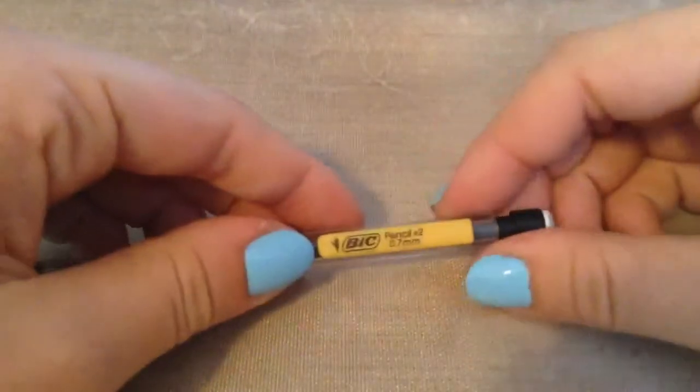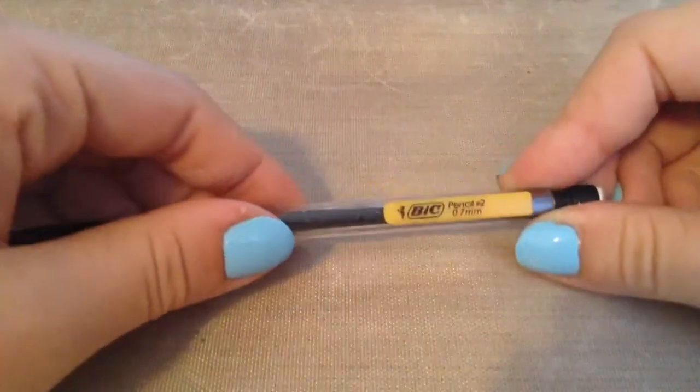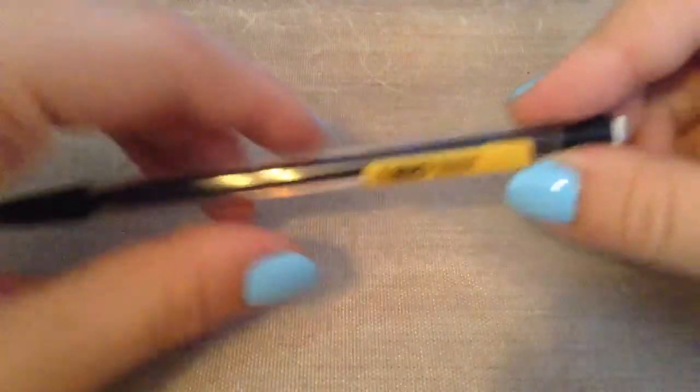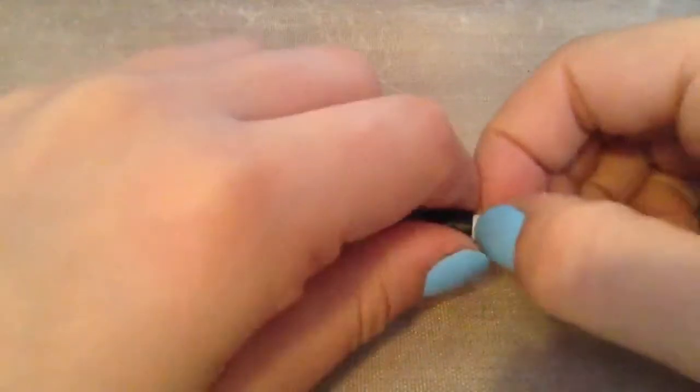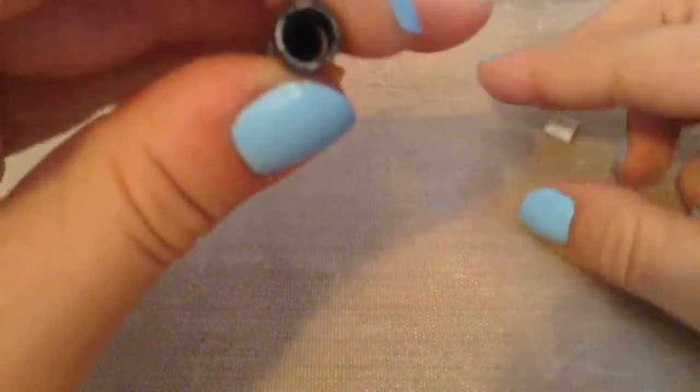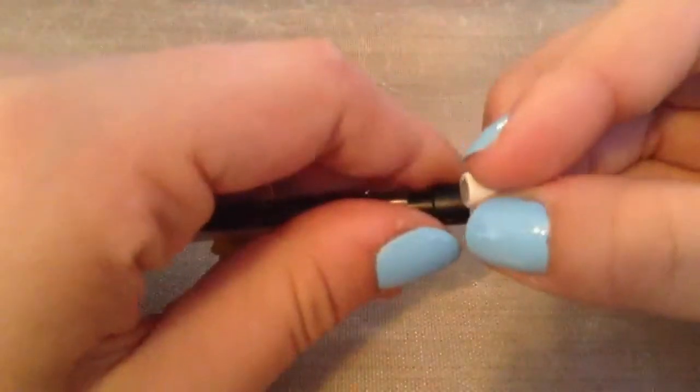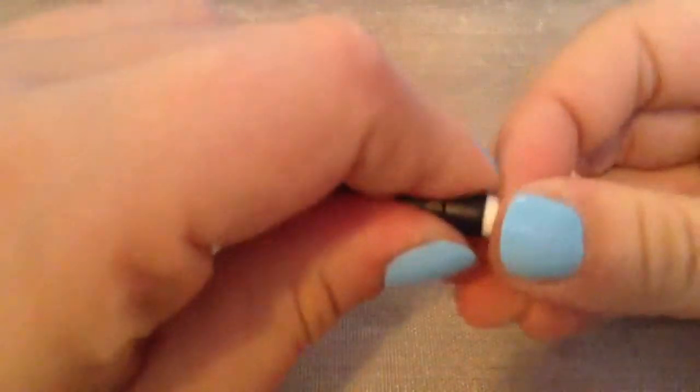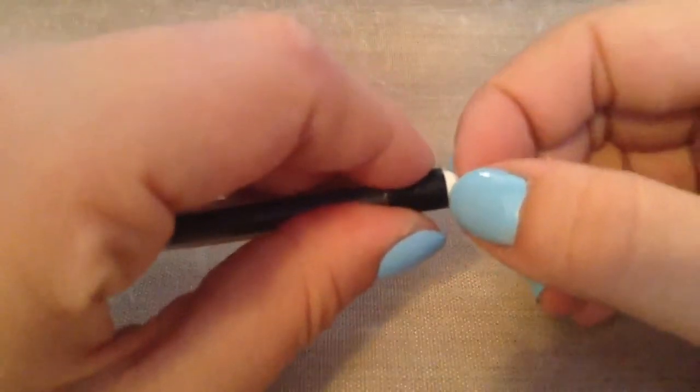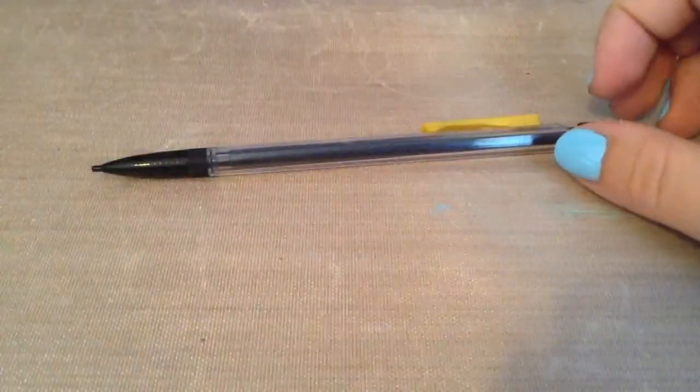We're going to start off by taking any pencil. I prefer mechanical, but you could use a regular yellow pencil as well. For a mechanical pencil, when you take the eraser out, you can see that the plastic part is hollow, so the pin will be able to go directly through the plastic, unlike a yellow pencil where the eraser stops and hits solid wood.